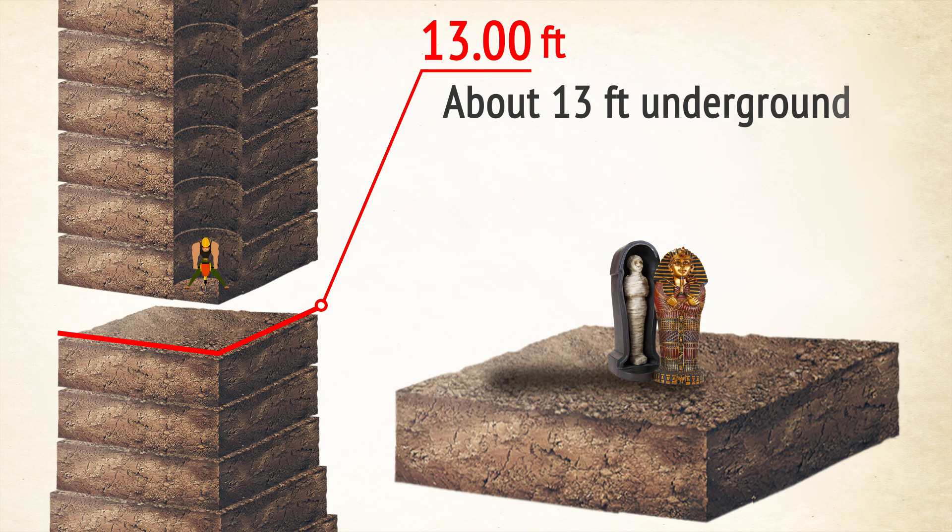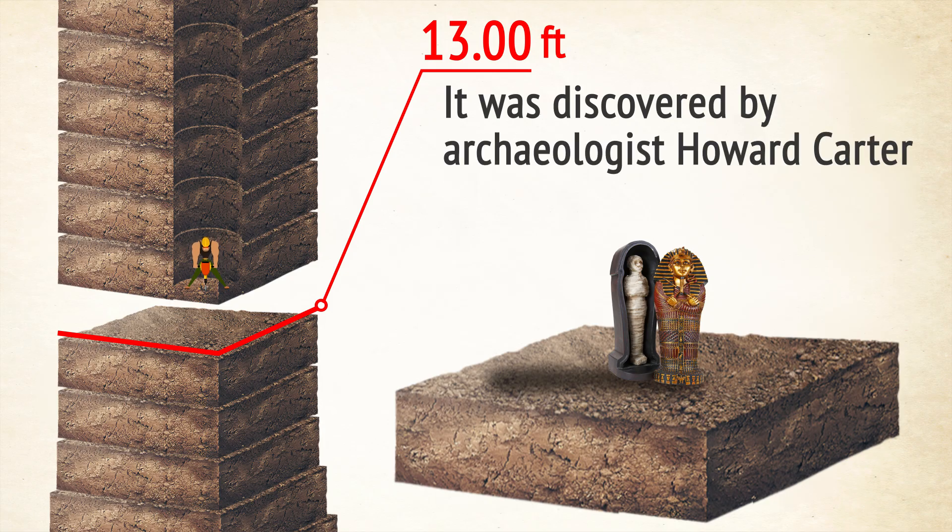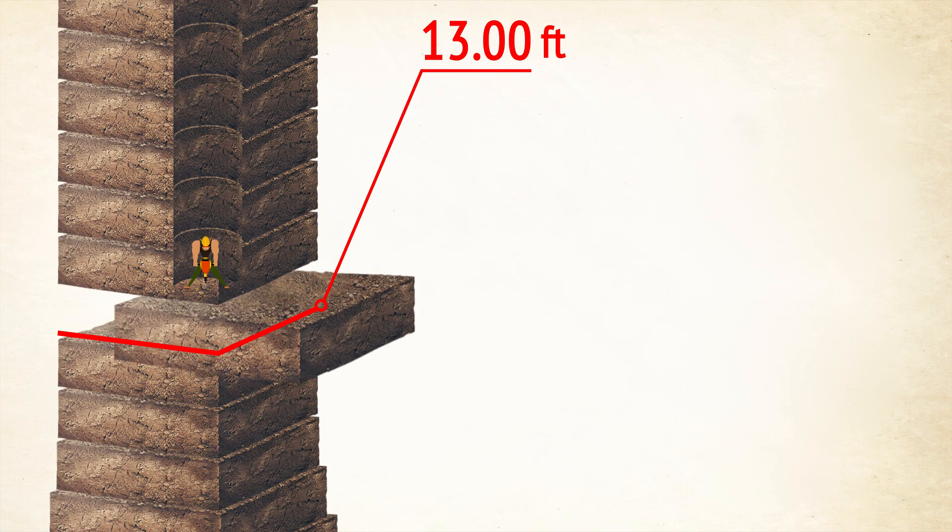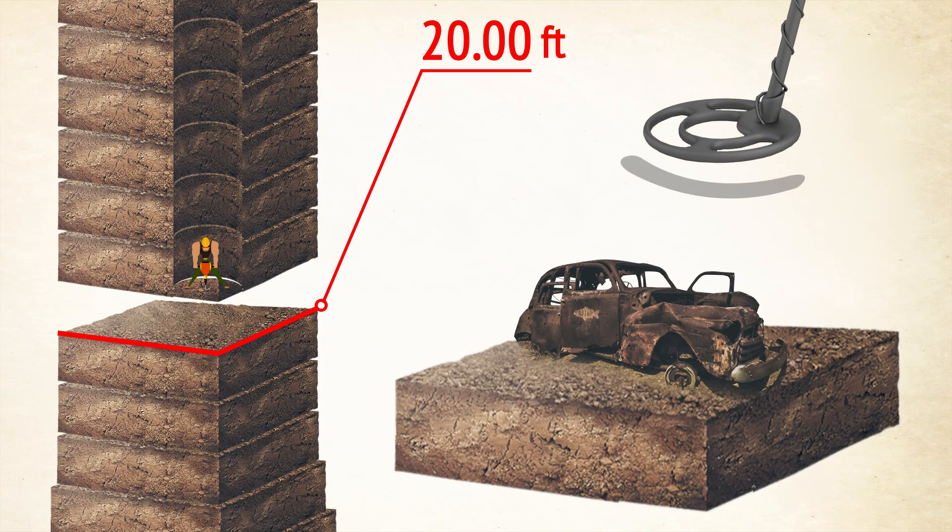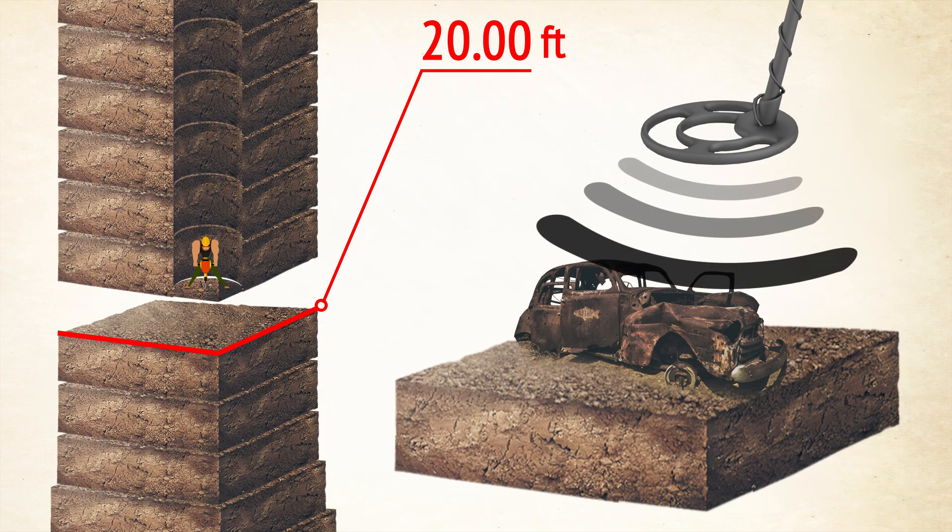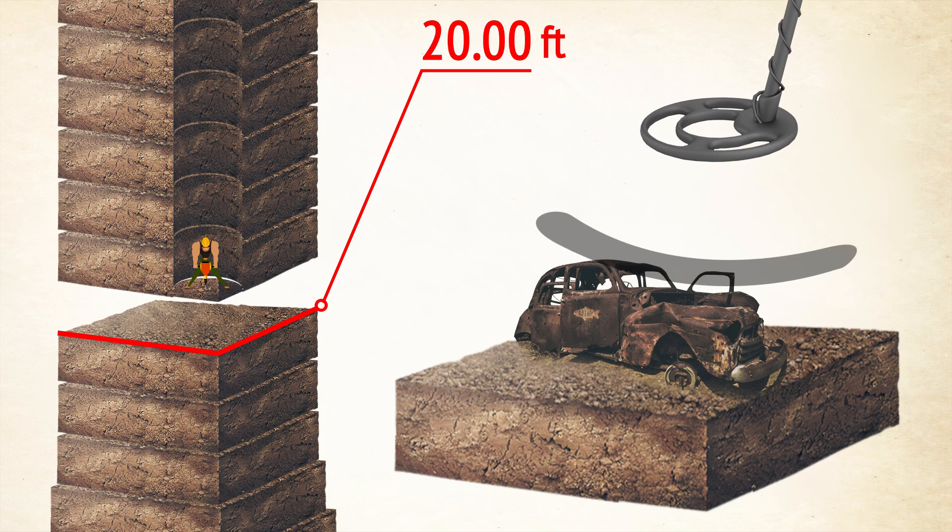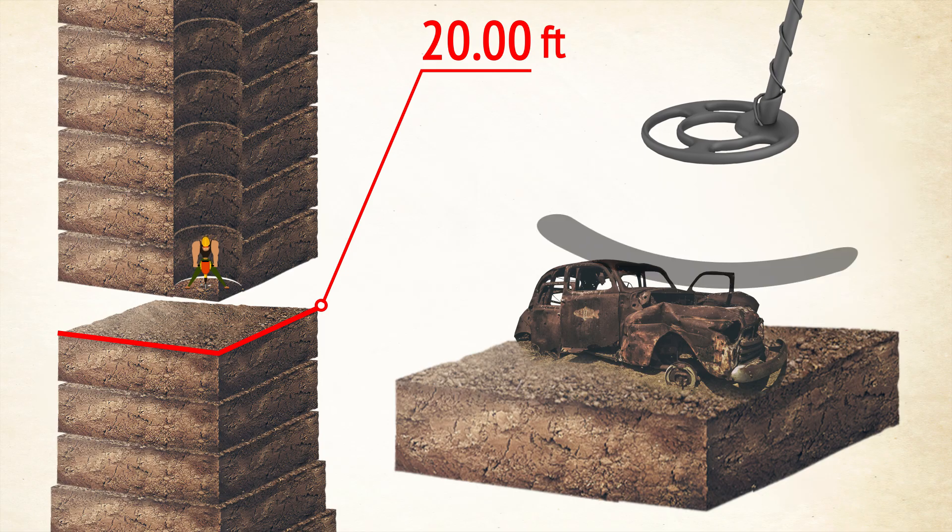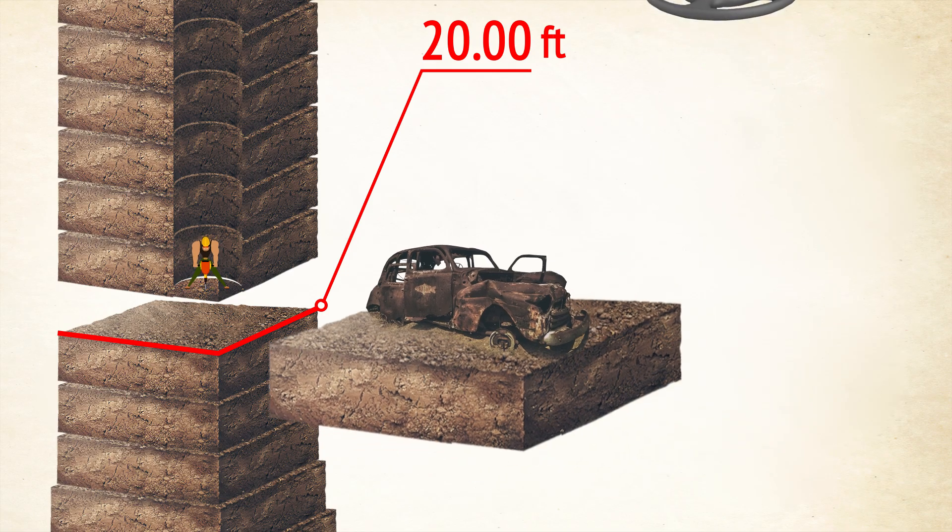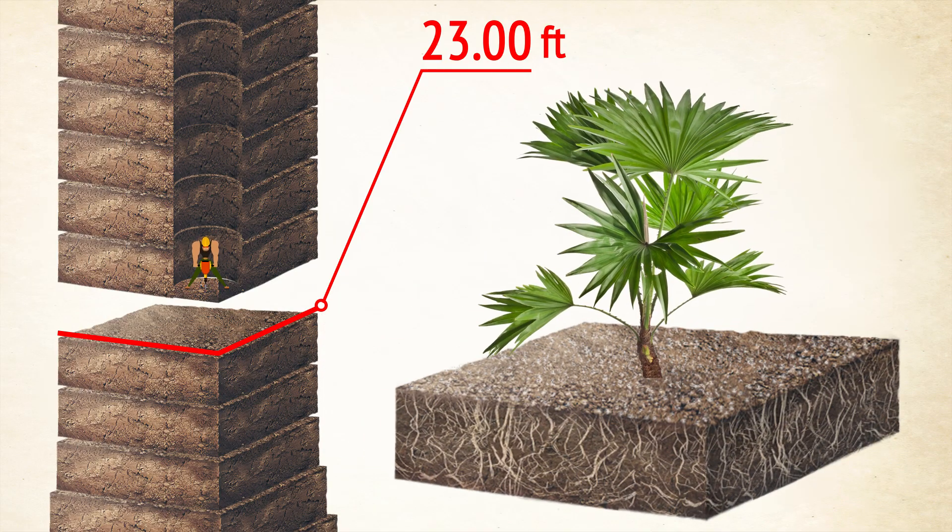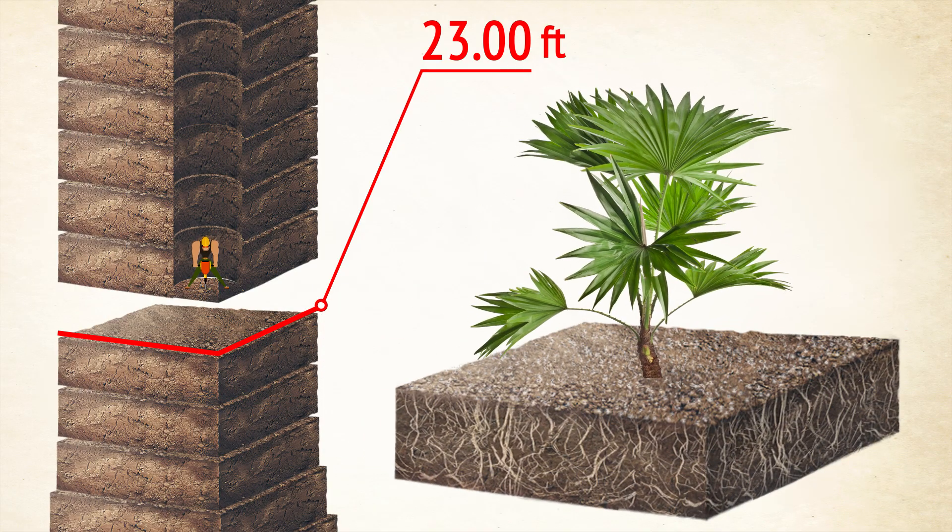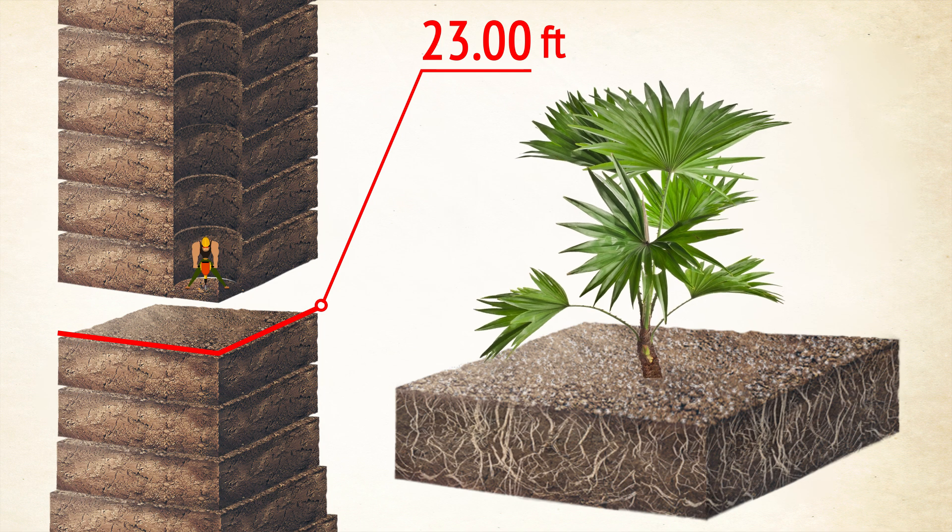About 13 feet underground, we come across the tomb of Pharaoh Tutankhamen. It was discovered by archaeologist Howard Carter in 1922. 20 feet is the maximum range of a metal detector. Even so, a high-end detector will probably spot a car hidden underground at this depth, but if a detector is not so advanced, or if an object is small, it won't work. However, you can still find the roots of tropical forest plants if you dig 23 feet down.